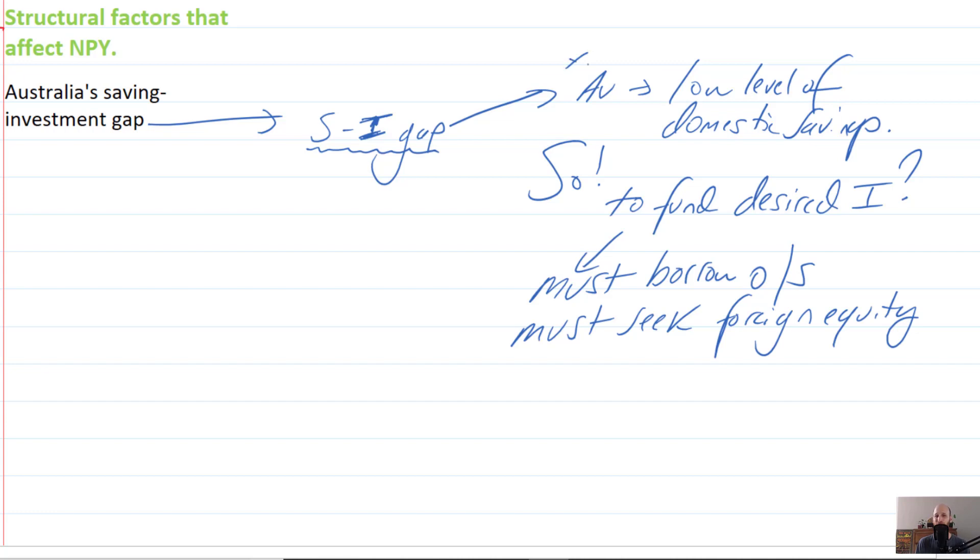This kind of relationship where Australia has a low level of domestic savings, so that it doesn't have enough domestic savings to fund investment. So if it wants to fund the desired investment, and remember this is the situation...